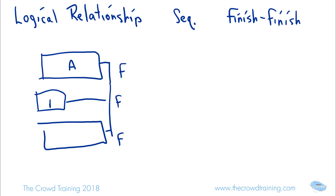For instance, I have A, B, and C, and I want to make sure that I can't say A is done until B is also done and C is done. I cannot call any of these finished because they all must finish together in order to be considered finished.